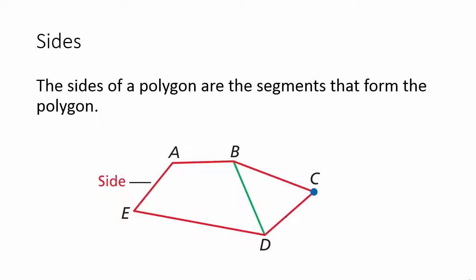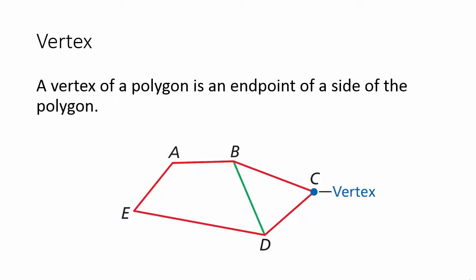Sides: the sides of a polygon are the segments that form the polygon. Vertex: a vertex of a polygon is an endpoint of a side of the polygon.